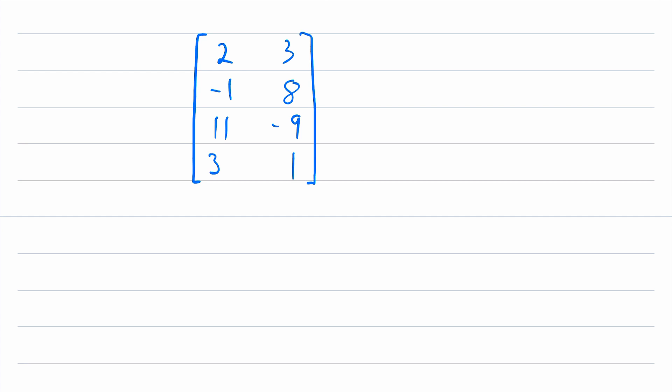But we can also use the same definition of main diagonal when looking at a matrix that is not a square matrix. For example, here is a matrix with four rows and only two columns.